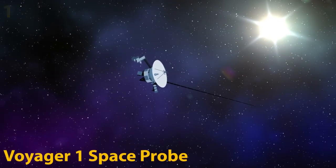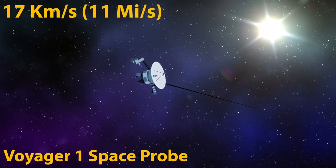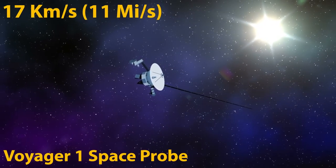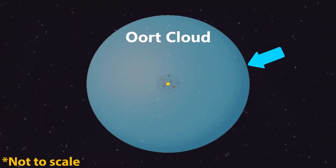Voyager 1 is currently traveling at 17 kilometers every single second. But even at that speed, it won't break out of the reach of our solar system for another 30,000 years.